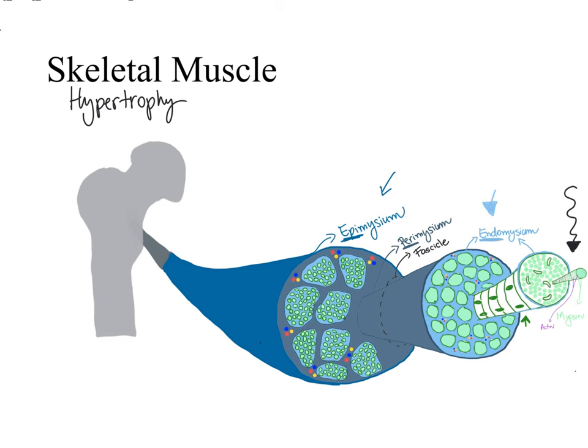Sometimes, instead of having this tube-like structure that is the tendon attaching a muscle to a bone, the epimysium, perimysium, and endomysium fuse and become a sheath of connective tissue. This sheath of connective tissue receives the name of aponeurosis. Like tendons, aponeurosis provides support to our muscles, such as strength and stability.